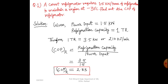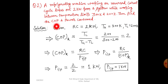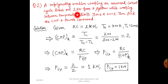Moving on to the next question: a refrigerating machine working on a reverse Carnot cycle takes out 2 kilowatt from a system while working between temperature limits 300 Kelvin and 200 Kelvin. Find the coefficient of performance and power consumed. The given inputs are: refrigeration capacity is 2 kilowatt, higher temperature is 300 Kelvin, and lower temperature is 200 Kelvin.